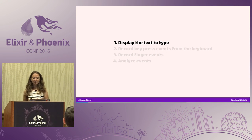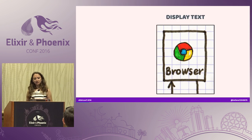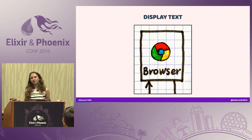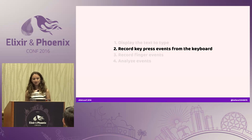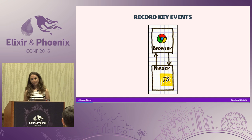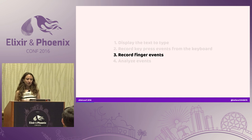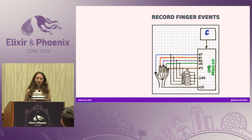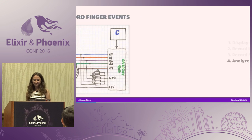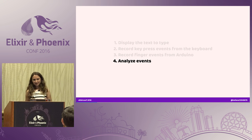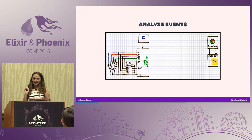Let's go through those steps, and I would like to share the tools I have chosen. For displaying text, I've chosen a browser, as I'm familiar with how to work with other applications. To record key press events, I'm using JavaScript — Phaser in particular. To record finger events, I'm going to use Arduino, a little bit of C programming, and sensors — but I'll get to that later. And to analyze events, I'm going to use Elixir.